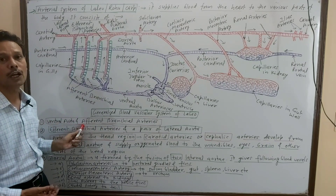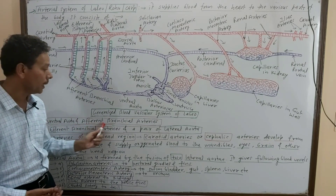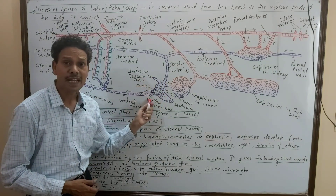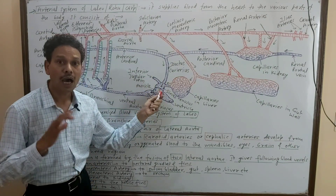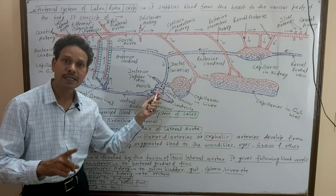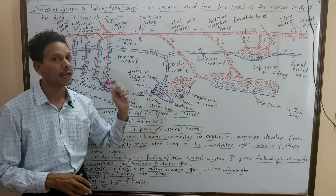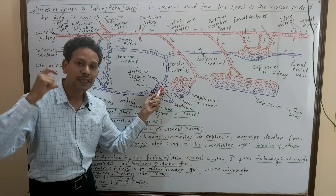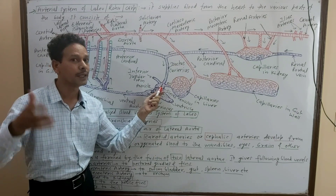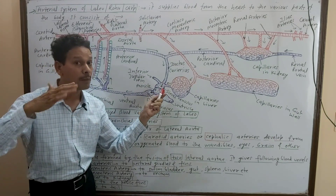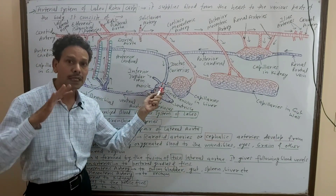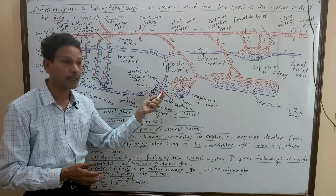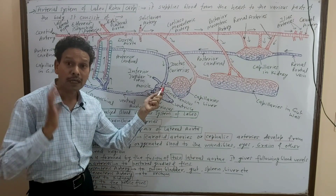The heart is at the center, which consists of sinus venosus. In the sinus venosus, deoxygenated blood from all body organs comes into this cavity — the largest chamber of the heart. It receives blood.